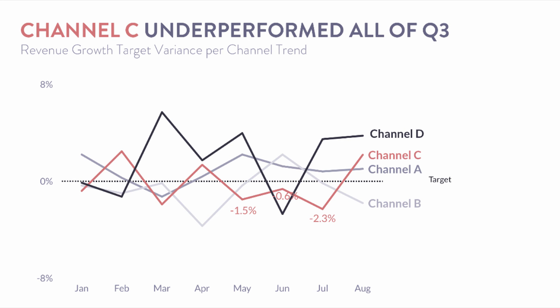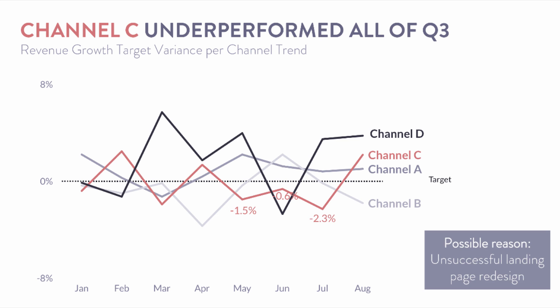Channel C underperformed all of Q3 — that was a really low point for that channel. We took a little dig and found that we redesigned our landing page, but it looks like it was unsuccessful in driving growth. So there is a little more of the story. After taking all this in, I took a step back and thought there might actually be another chart type that could be valuable in that large blown-out view — and that is called small multiples.